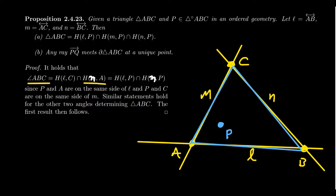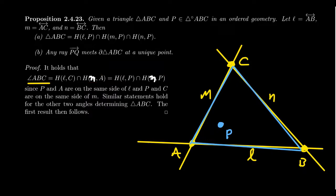Since being in a half plane is an equivalence relation, we can replace point C with point P — C and P are on the same side of L — and replace point A with point P, since A and P are on the same side of N. Doing this substitution for all three angles — ABC, BAC, and BCA — we get the half planes bounded by L, M, and N with interior point P. Each half plane appears twice in the intersection, but that doesn't affect the result. So the triangle, as the intersection of three angles, equals the intersection of those three half planes.